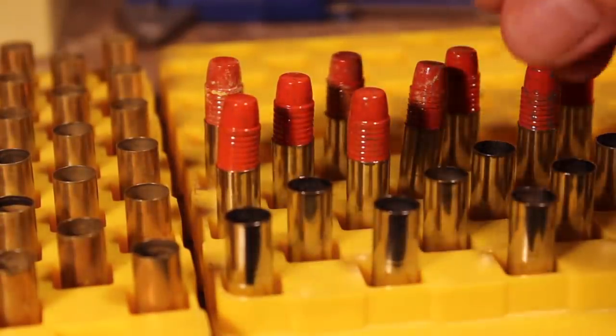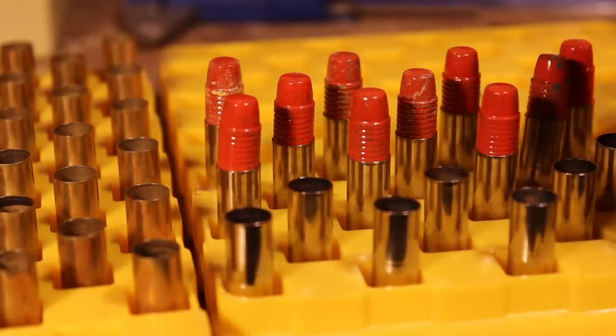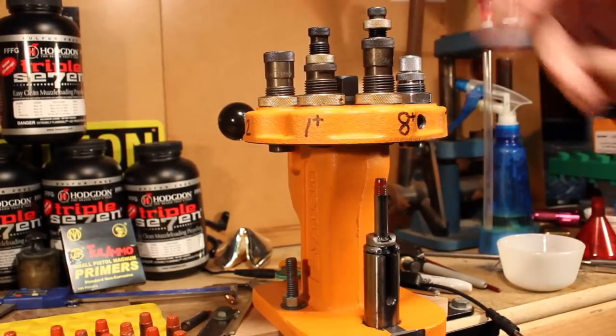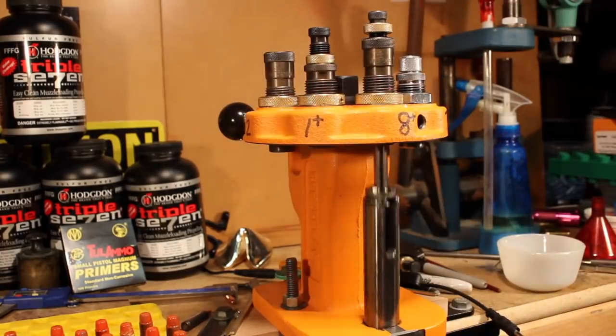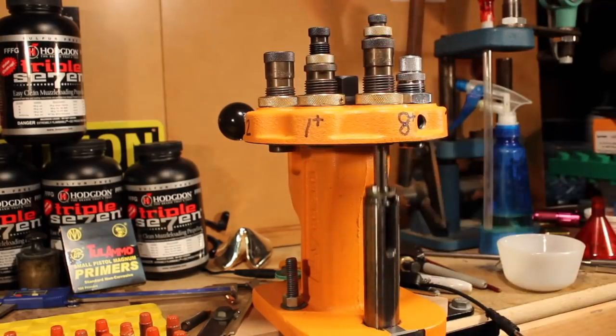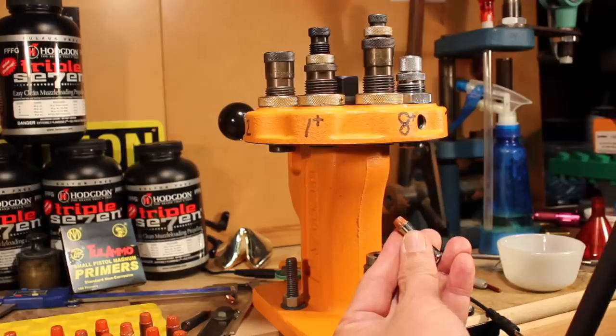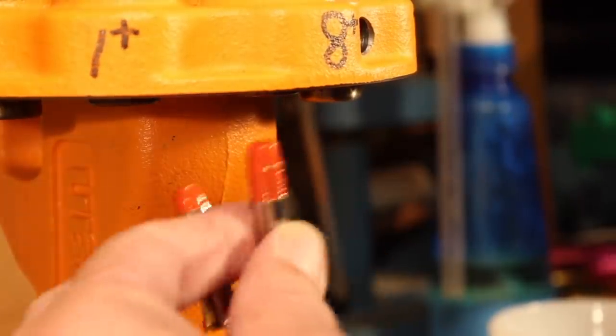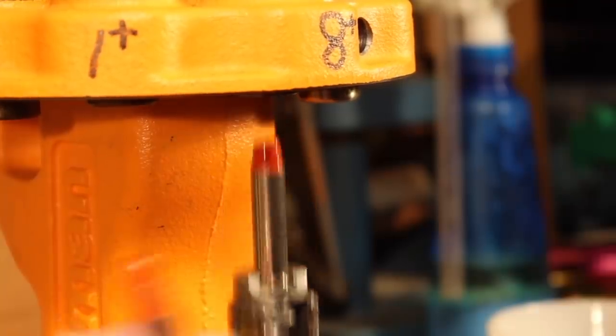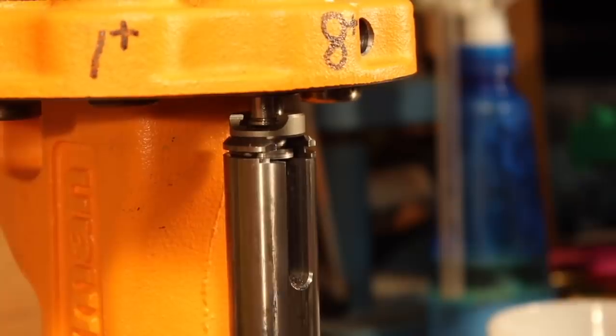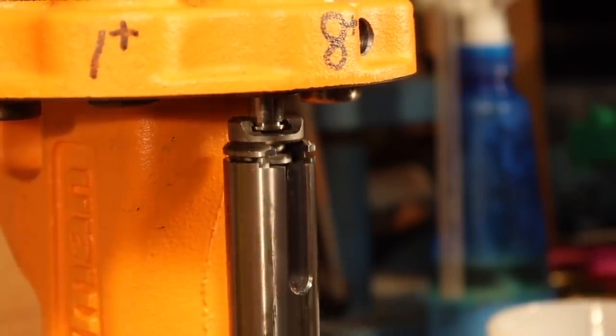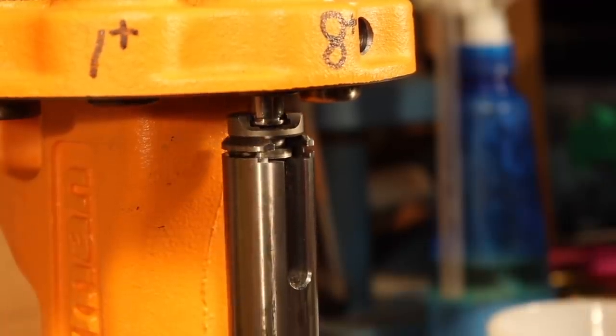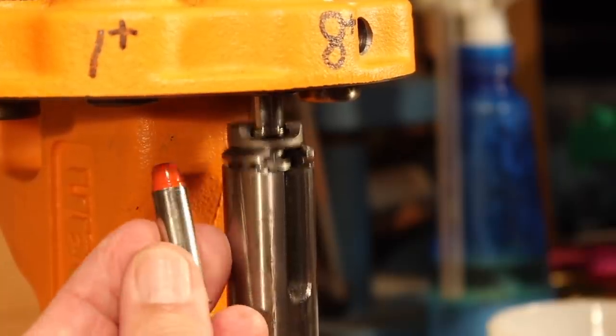It's automatically squared up. And that's because of the two step mouth flaring that we accomplished. Now we simply make sure that the crimping shoulder in the die body doesn't engage the case mouth. And then we go ahead and adjust the stem to start pushing that projectile down until the case mouth is even to the top tumble lube groove as you see here.